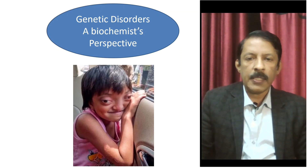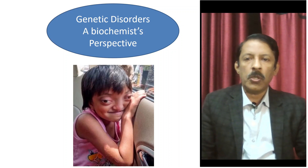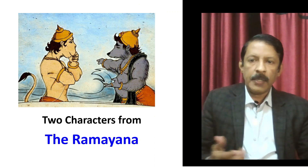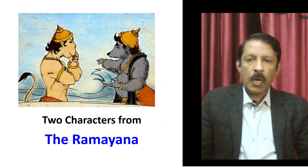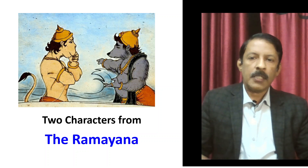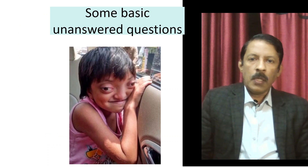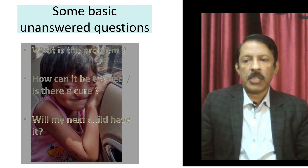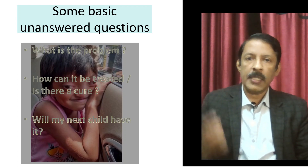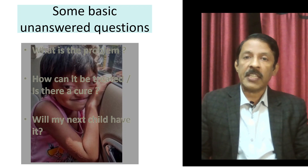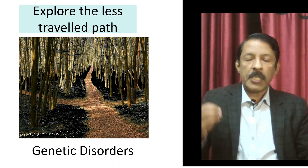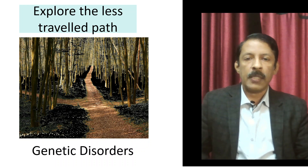I take this opportunity to thank ACC LMP Assam chapter for inviting me to give this lecture on genetic disorders from a biochemical perspective. There are two characters in Ramayana I'm showing you in this picture — identify them, I'll discuss this towards the end of my presentation. Some basic unanswered questions: when we get a child of this nature, what is the problem with this child? How can it be treated? Is there a cure? Will my next child be affected in a similar way? This is the basic query that any parent has when they have a child with some kind of deformities.